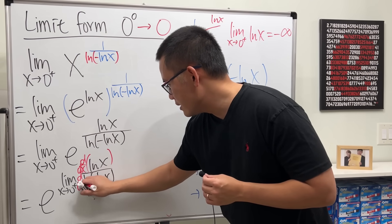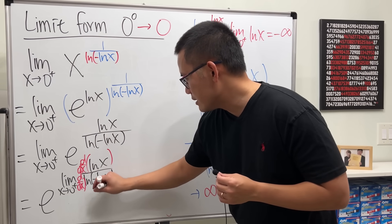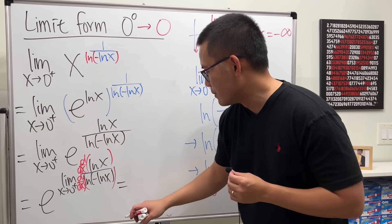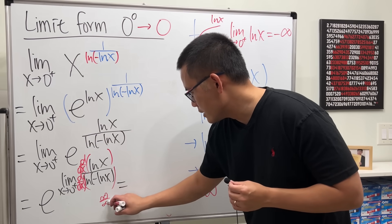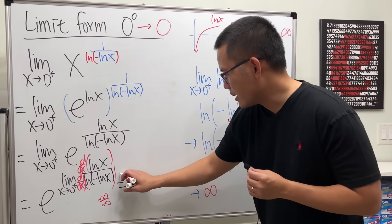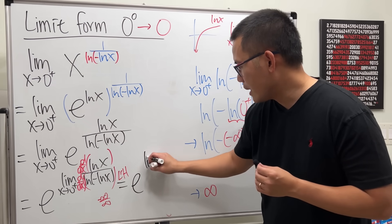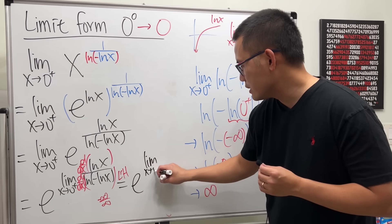And take the derivative again, this is because of the zero to the zero, sorry, infinity to the infinity power form, technically negative. So by L'Hôpital, the base is still e and then the power is the limit as x approaching zero plus.